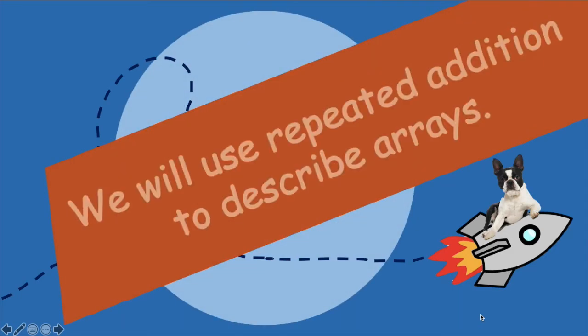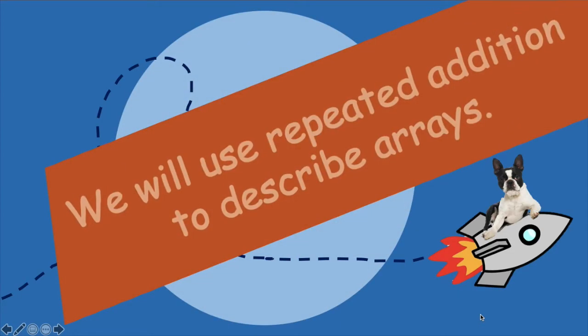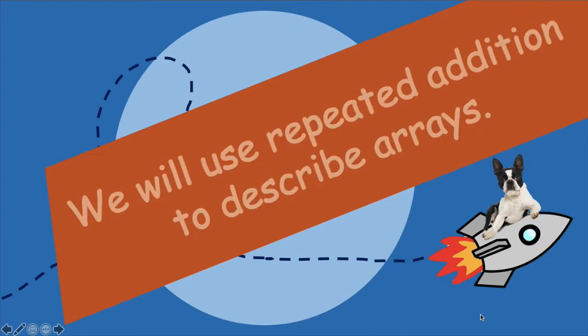Hi there! Welcome back to KIPP DC Math. Today we will use repeated addition to describe arrays. Yesterday we learned that an array is a fancy second grade word for a rectangle, and arrays have equal rows and equal columns.